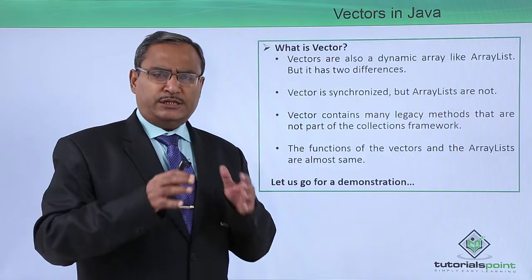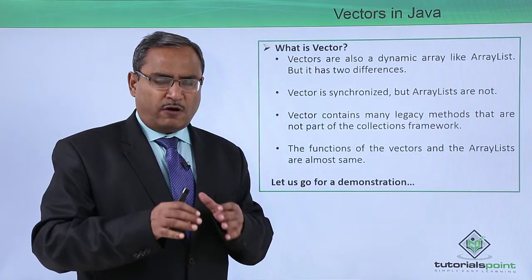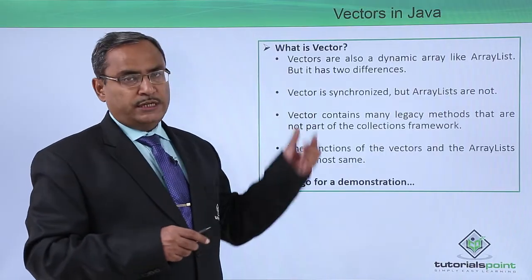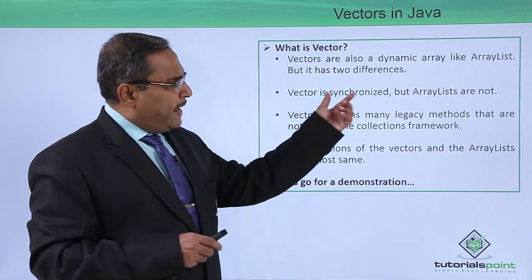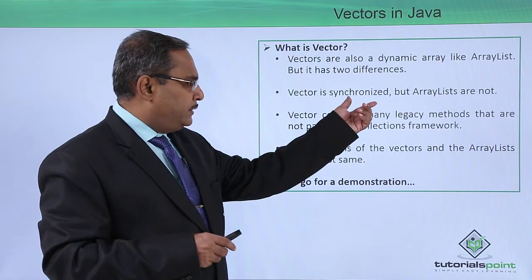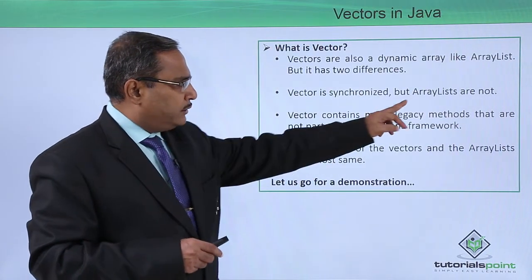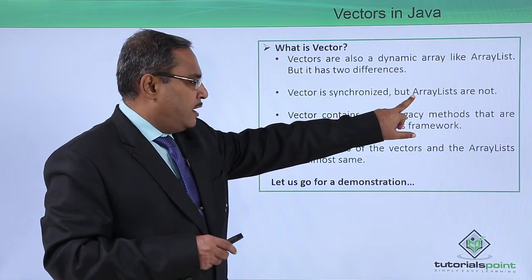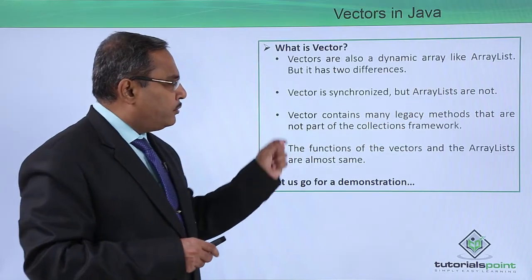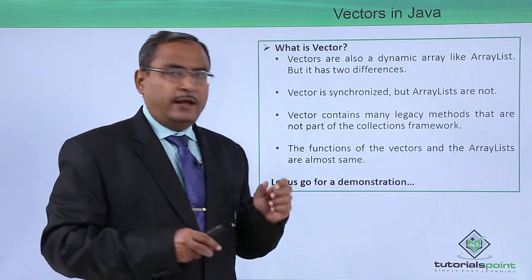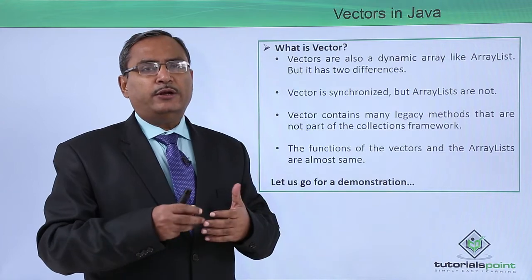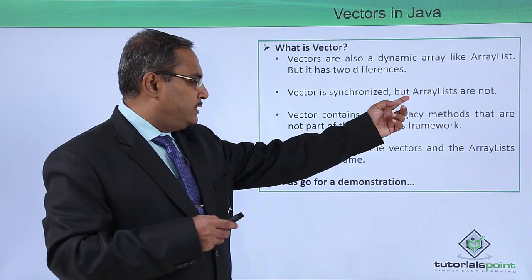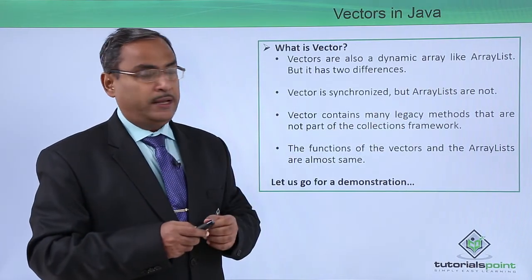So the recommendation is: for a single-threaded environment, we should use ArrayList. For a multi-threaded environment, we can use vector objects. However, for ArrayList in a multi-threaded environment, we can use Collections.synchronizedList() to create a synchronized list, giving an equivalent result to a vector.